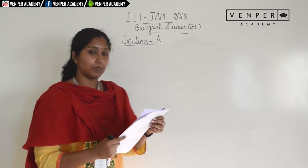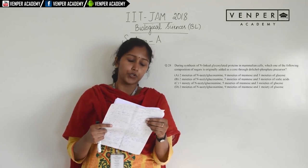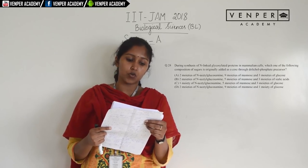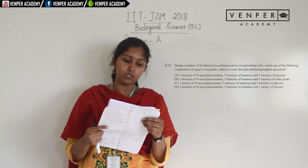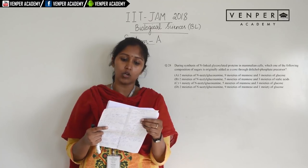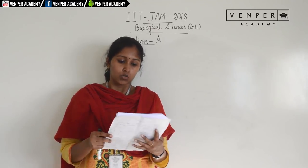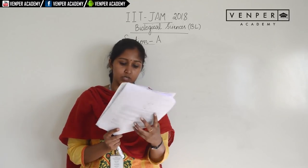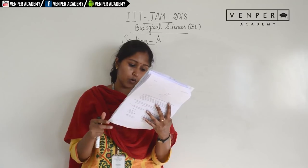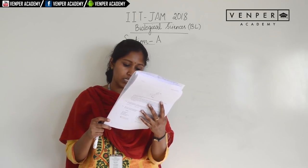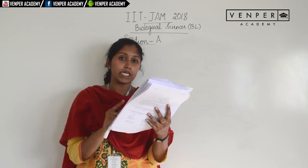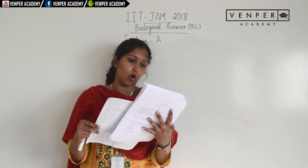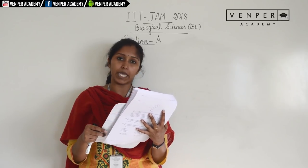Question 28: during synthesis of N-linked glycosylated proteins in mammalian cells, the core sugar composition originally added through the dolichol phosphate precursor consists of two units of N-acetylglucosamine, nine units of mannose, and three units of glucose. The correct option is option A.